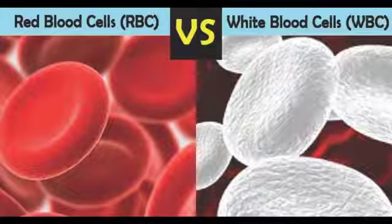RBCs occur only in vertebrates and are the most abundant of blood corpuscles. The shape, size, and structure of RBCs vary in different types of vertebrates but are similar in function — that is, transport of materials.